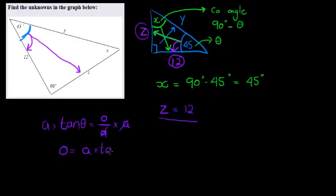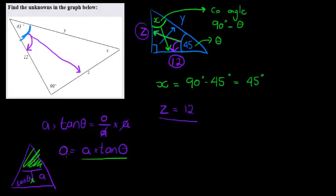So I'm trying to find opposite. So I multiply with A on both sides. To cancel on this side so that I have opposite is equal to adjacent times tan theta.